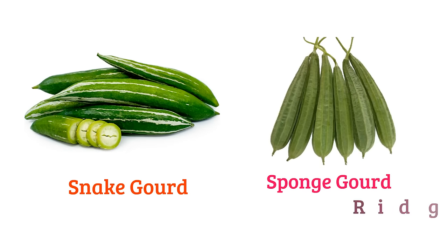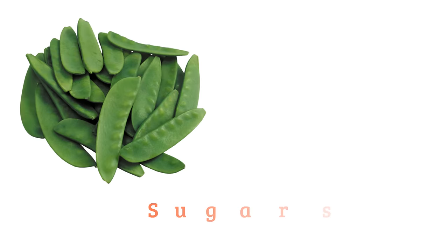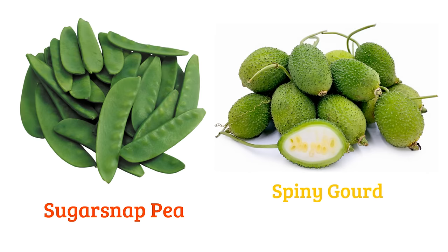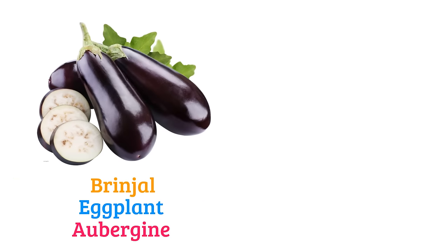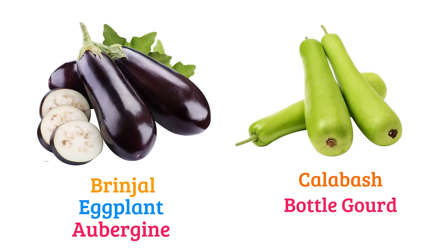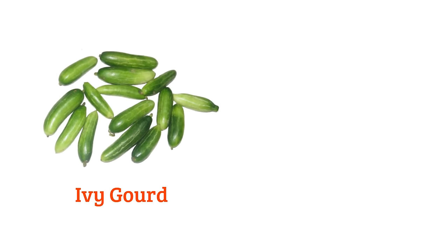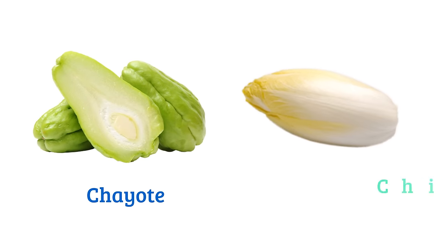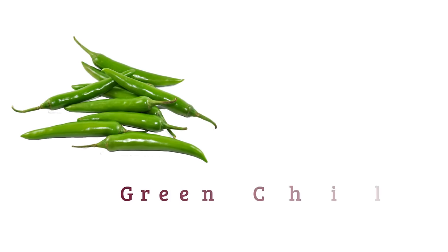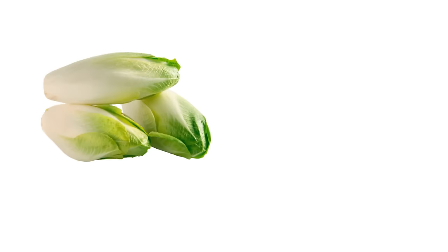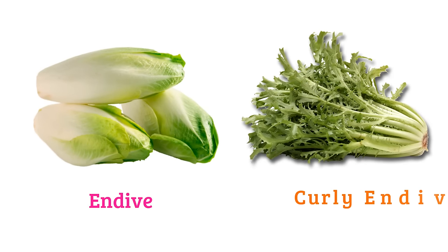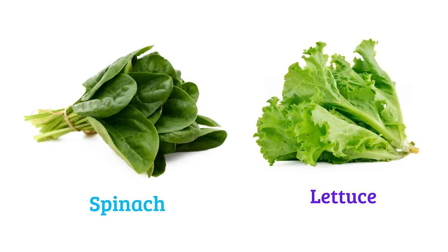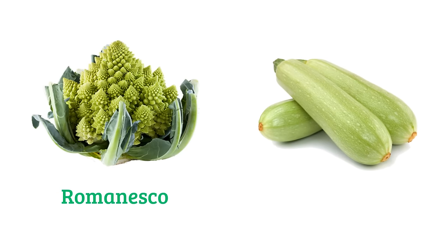Sponge gourd or ridge gourd, sugar snap pea, spiny gourd or teasel gourd, brinjal or eggplant or aubergine, calabash or bottle gourd, ivy gourd, sweet potato, chayote, chickweed, green chili, red chili, endive, curly endive, spinach, lettuce, romanesco, marrow.